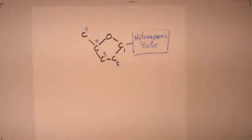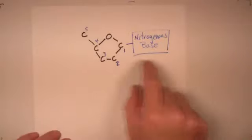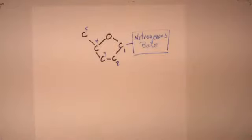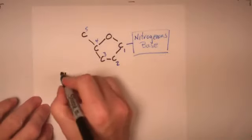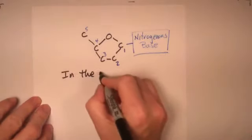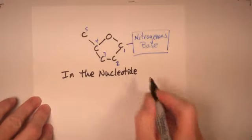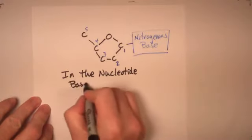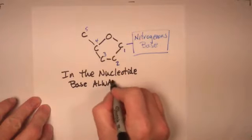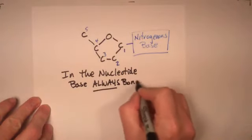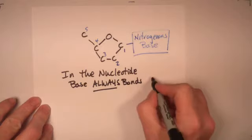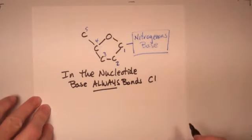If it's RNA, it's going to be guanine, adenine, cytosine, but instead of thymine, it will be uracil. And so within the nucleotide, in the nucleotide, the base always bonds to the number one carbon, to C1. Always, always, always, always.